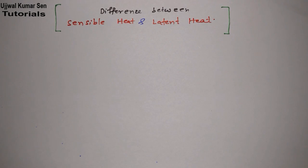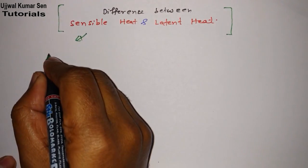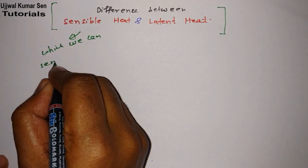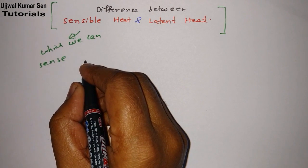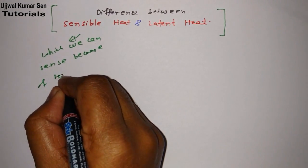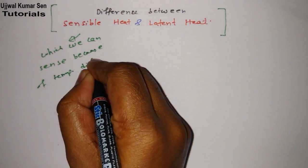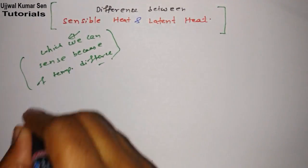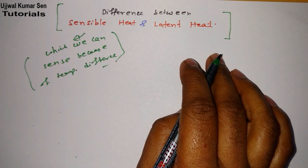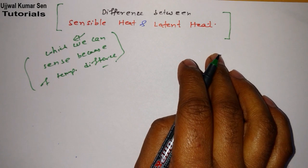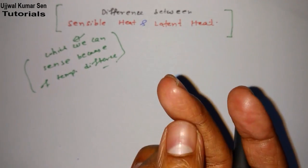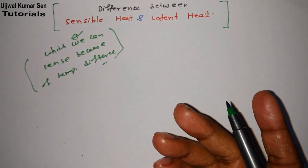Sensible heat is heat which we can sense. If we touch something, we will sense it because of temperature difference. If something you're touching — just because of touching you can sense that temperature — that is known as sensible heat. If your body temperature and the temperature of the place you're touching with your finger are the same, then you cannot sense it.